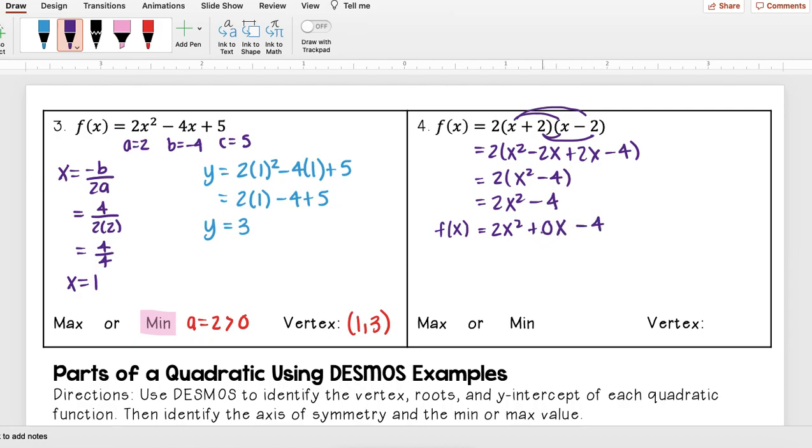So that means my b term here is really 0. And so when I'm finding my x value, -b, well, my b is just 0, over 2 times a, which is just 2, is going to equal 0.